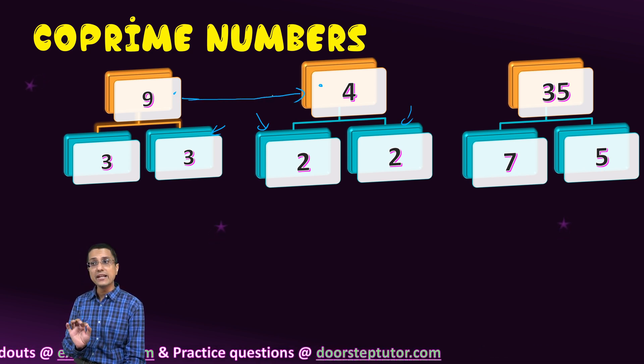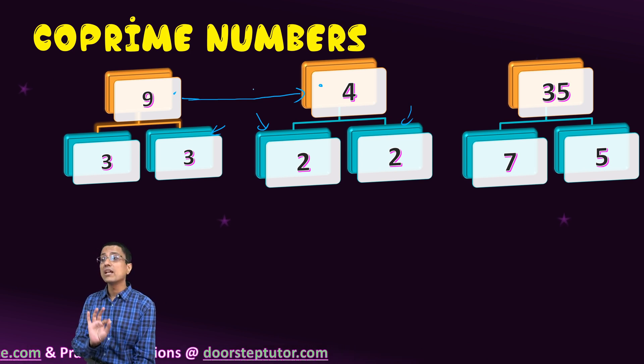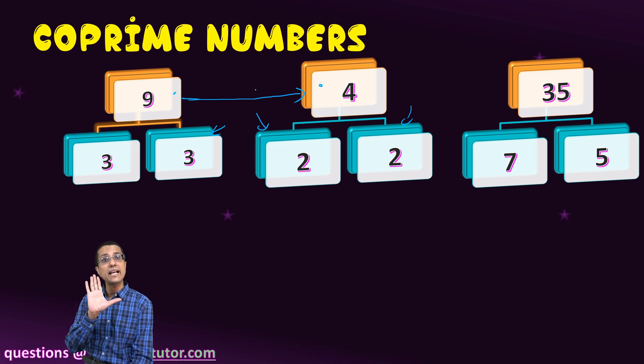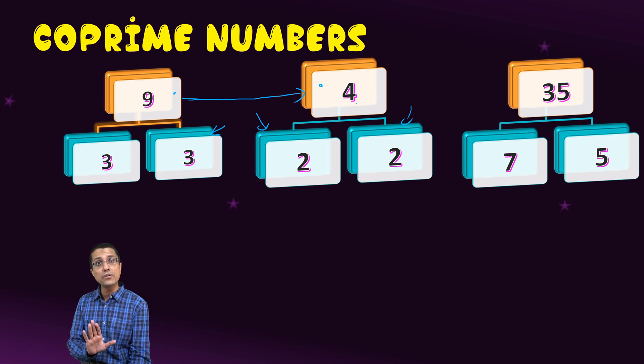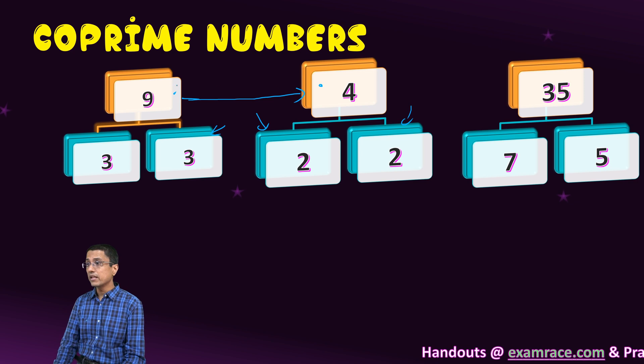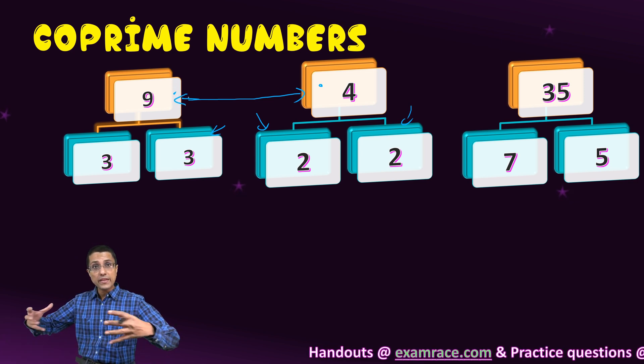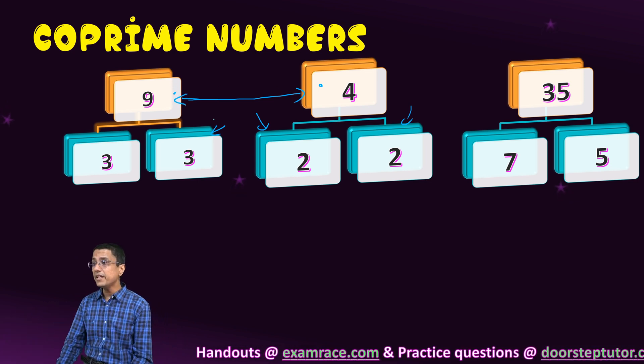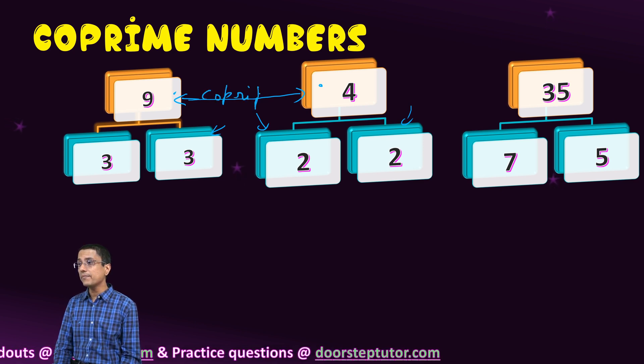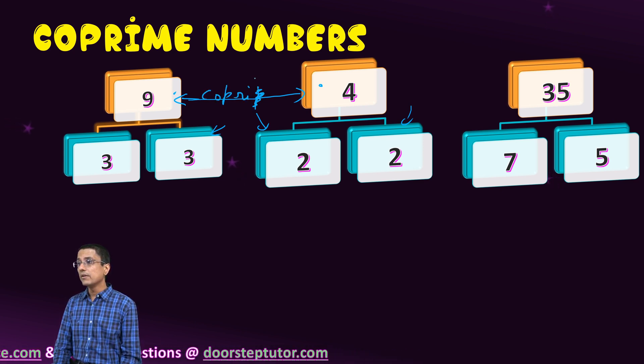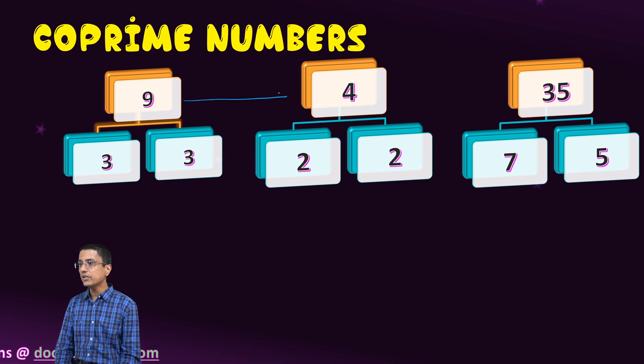See, the key thing here is that neither 9 nor 4 is actually prime. 4 is not prime, it is divisible by 2. 9 is also not prime, it is divisible by 3. But when together, when considered together, we can say that 9 is co-prime. So co-prime is the relationship. Co-prime is actually the relationship between these two numbers.